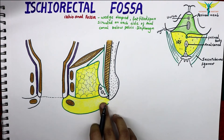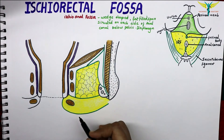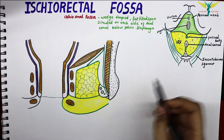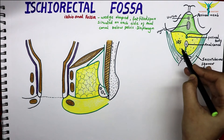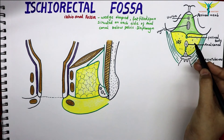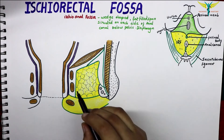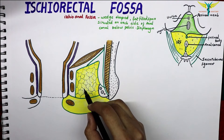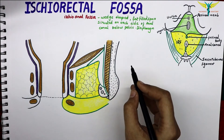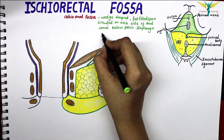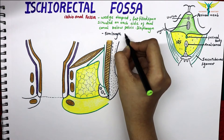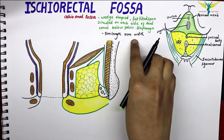The base of this fossa lies on the skin over the anal region of the perineum, and the apex is directed upwards and laterally. Each fossa measures about 5 cm in length and 5 cm in width, though the width can be slightly more.